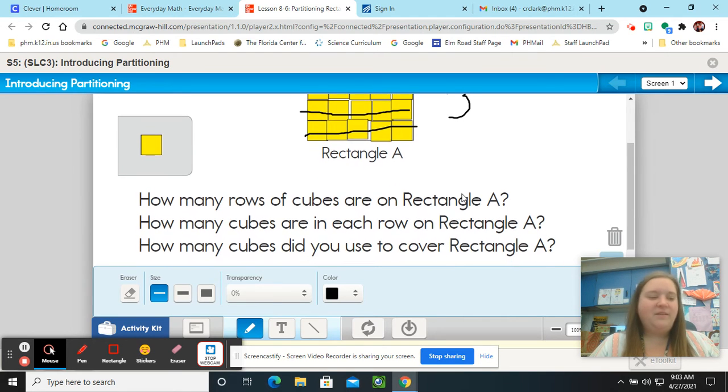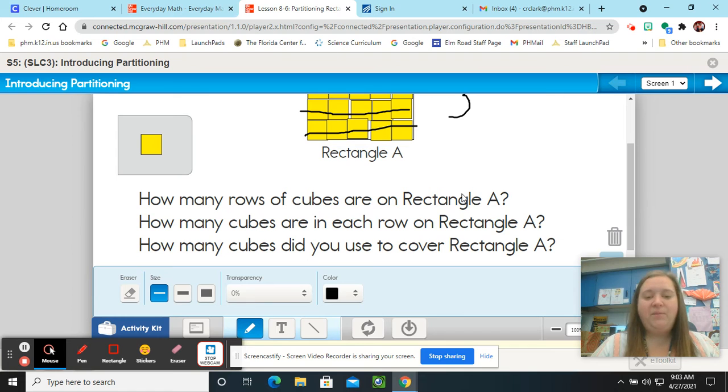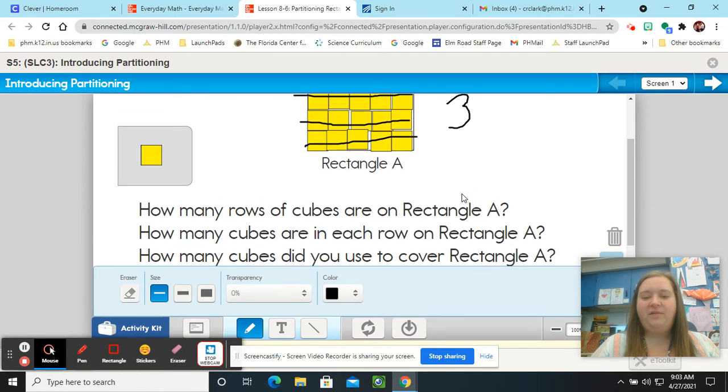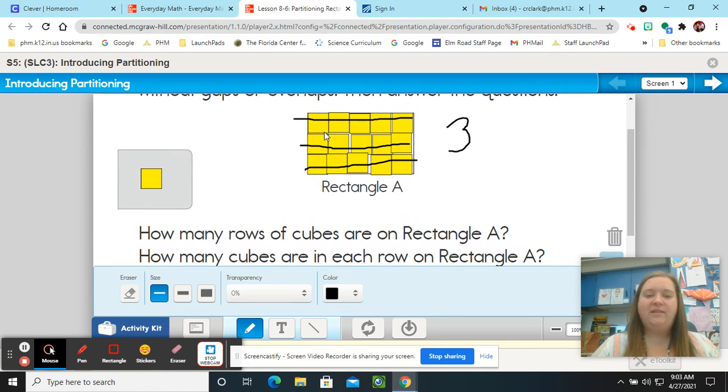Look at our next question. How many cubes are in each row on rectangle A? So let's count the cubes. 1, 2, 3, 4, 5. There are 5 cubes in each row.